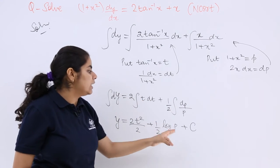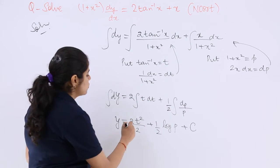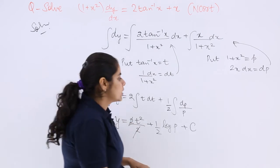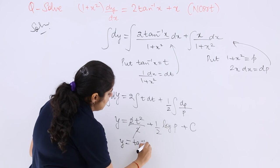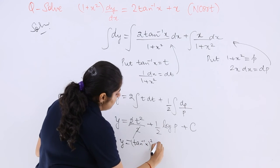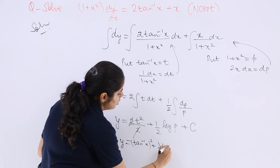So 2 and 2 gets cancelled. So what is t? y = (tan⁻¹x)² plus (1/2)log p. What is p?